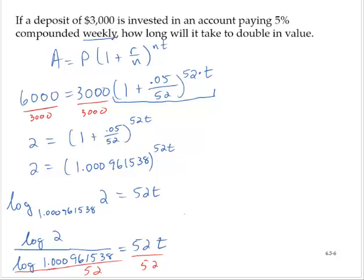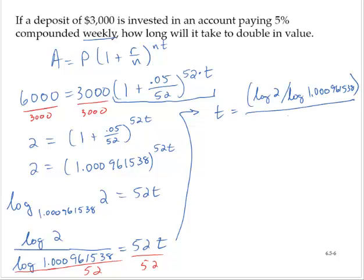So then t would be equal to log 2 over log 1.000961538, that all divided by 52. Now we have to be careful how we input that in the calculator.